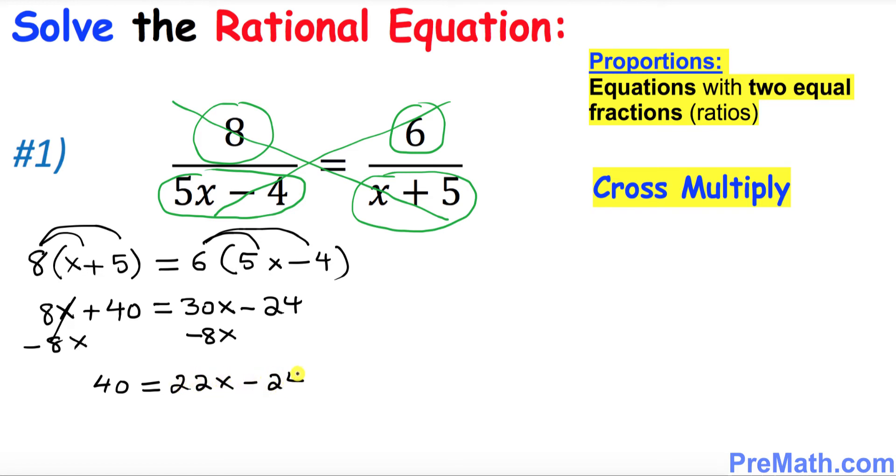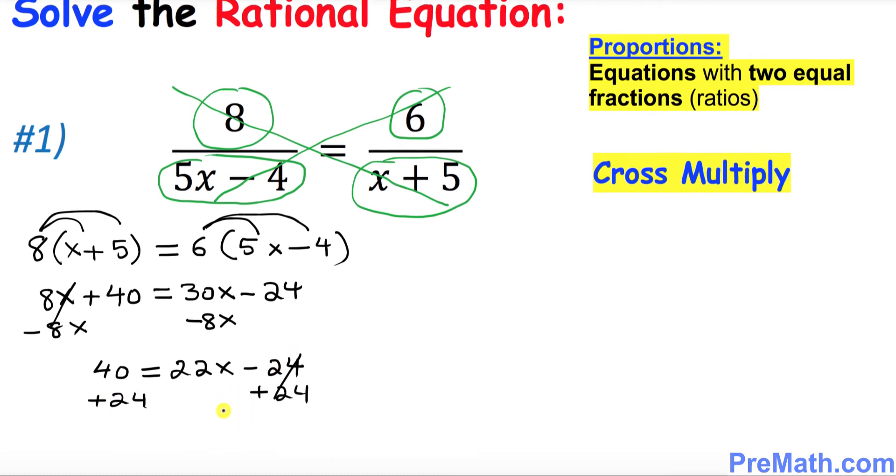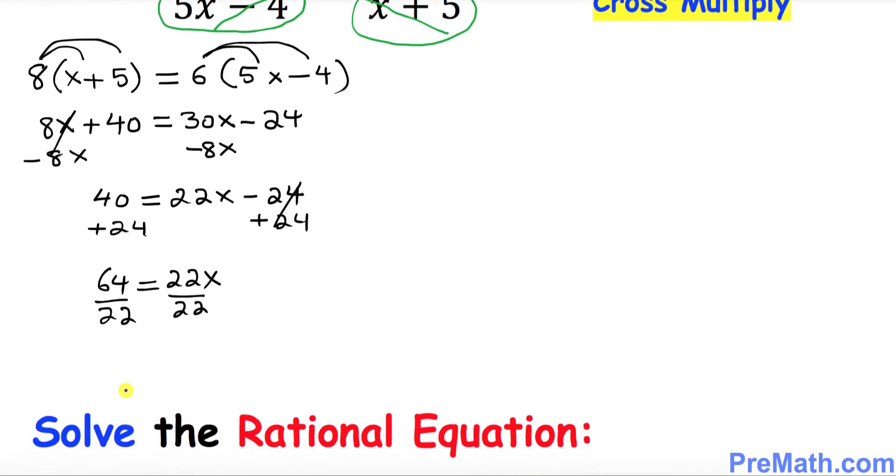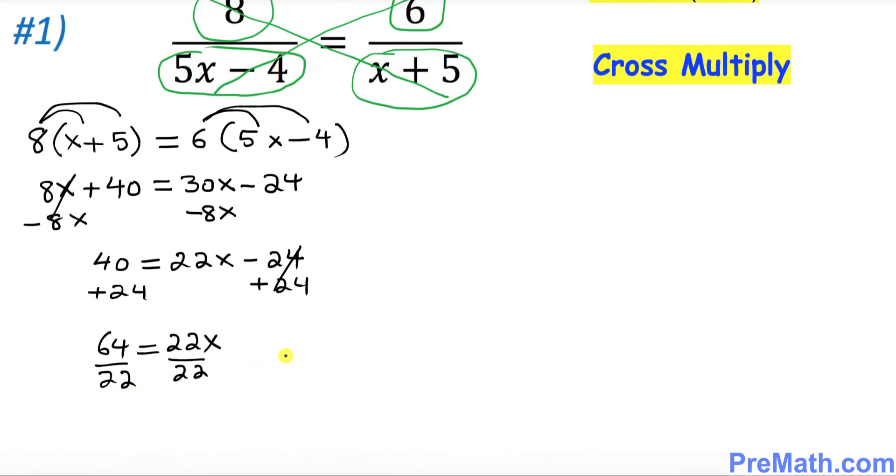Now add 24 on both sides, so we end up with 64 equals to 22x. I want you to isolate x by dividing 22 on both sides. That means x turns out to be, I can write x equals to 64 over 22.